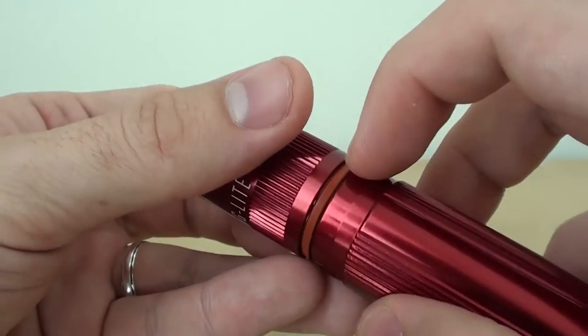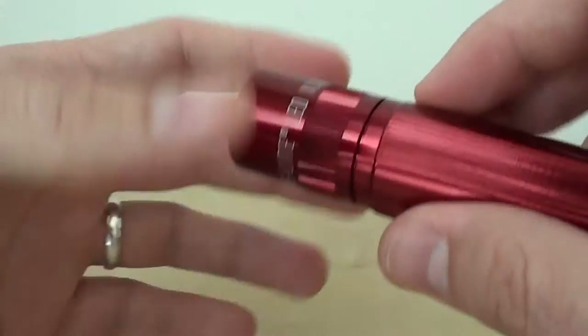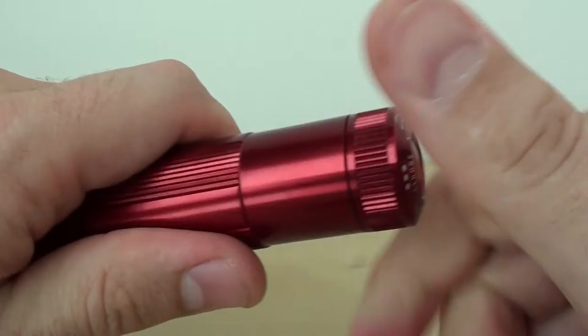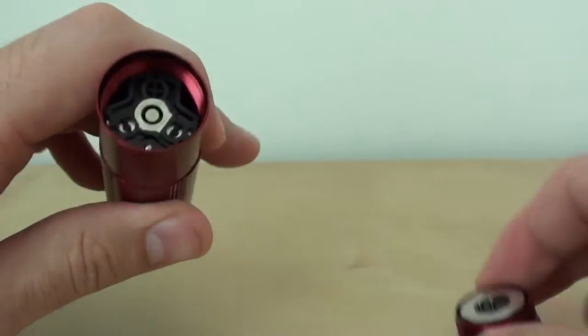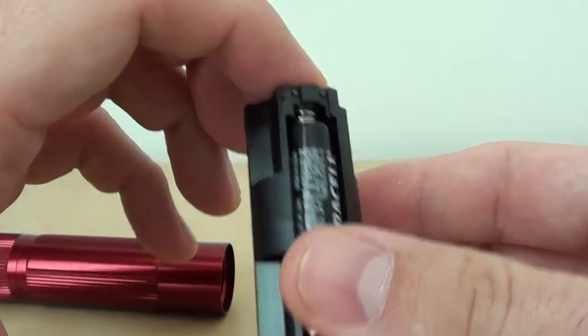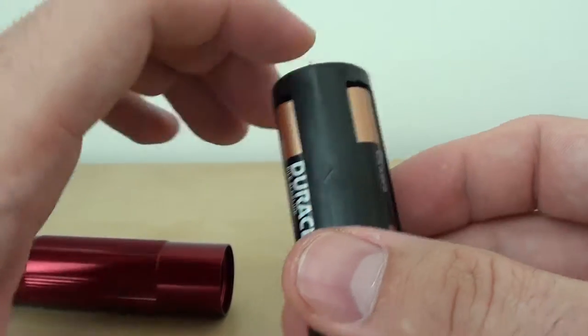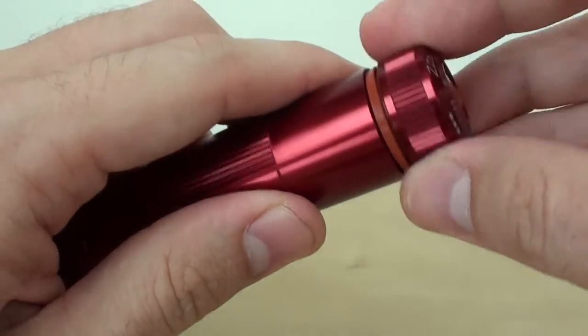Now you can see you have the sealing here which should prevent water from getting in. And then from the back we open it here and again you can see the ring here as well. And it has a battery pack holder so you just put the three AAA batteries inside and just close up.